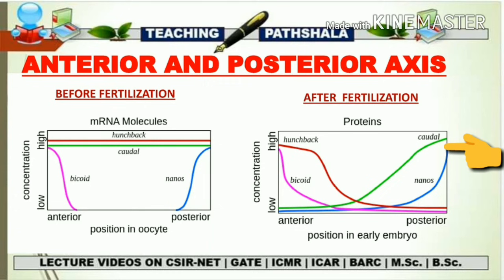In summary: bicoid and hunchback work together at the anterior, and nanos and caudal work together at the posterior. From the graph, bicoid and hunchback protein show very high concentration at the anterior side and nanos and caudal show very high concentration at the posterior side — this is in the early embryo stage after fertilization. Bicoid and hunchback protein expression makes that side the anterior portion; nanos and caudal expression makes that side the posterior.